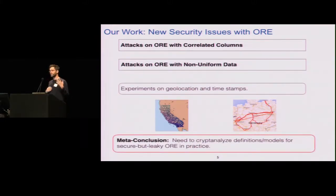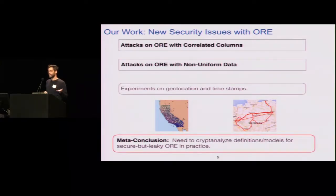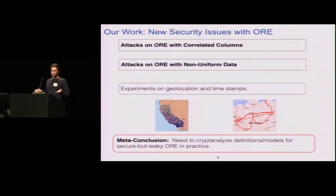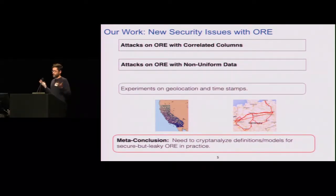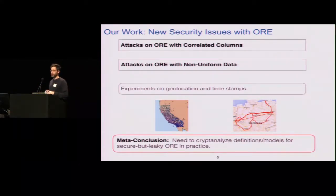Our conclusion — and to be fair, the inventors of order-revealing encryption have been saying this since their first papers — is that we don't have a really good understanding of what security you get when you use order-revealing encryption in an encrypted database application. This work is articulating what the original inventors were saying: we need to cryptanalyze not just the actual constructions, but the goals, models, and definitions we're trying to achieve.